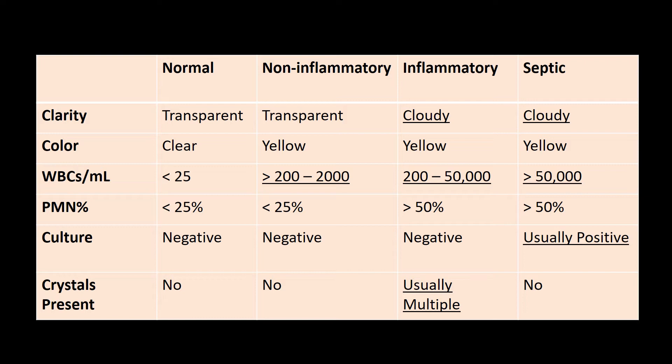Pseudogout will have calcium pyrophosphate crystals and the most affected joint is the knee. You're going to see calcifications on x-ray imaging, and the treatment is NSAIDs, colchicine, and steroids. There is no chronic or long-term treatment for pseudogout.